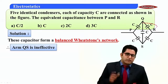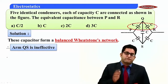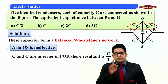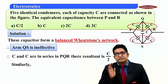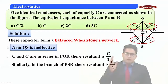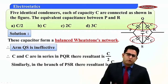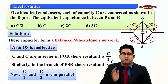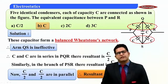In section PQR, two capacitors are connected in series, so the effective capacity is C/2. Similarly, in section PSR, two capacitors are again connected in series, giving a resultant capacity of C/2. These two sections are connected in parallel, so the effective capacity is C/2 + C/2 = C. The resultant capacity between points P and R is C, so option B is correct.